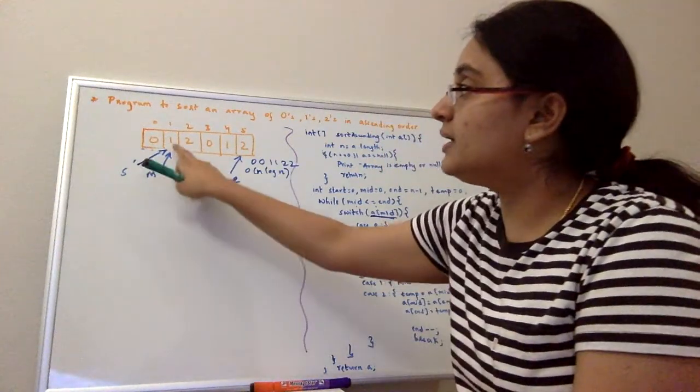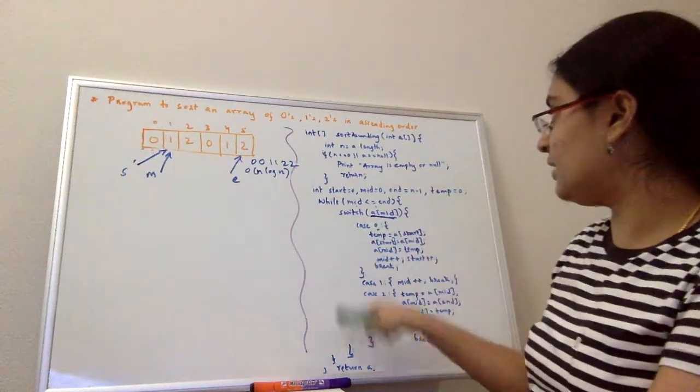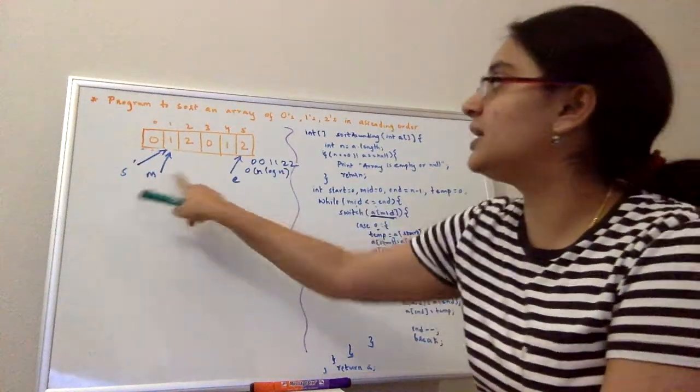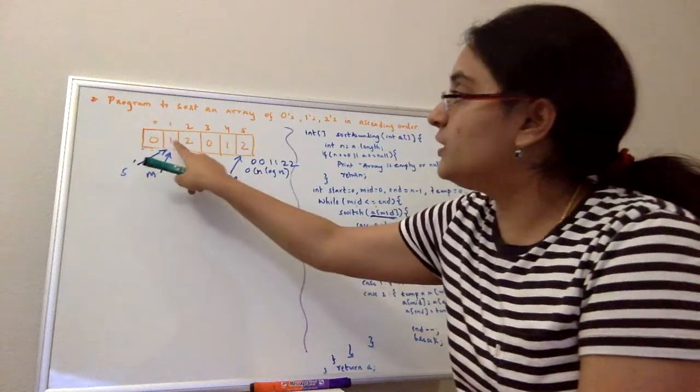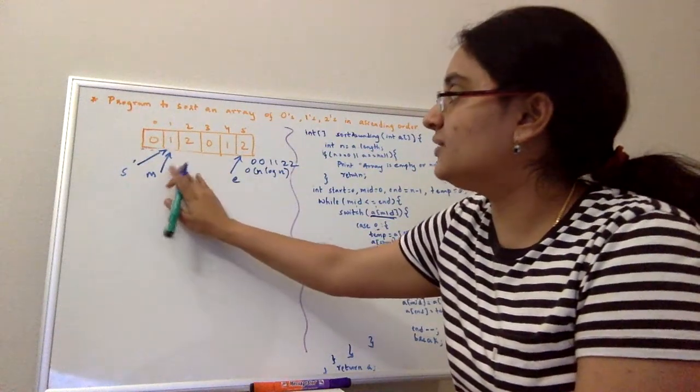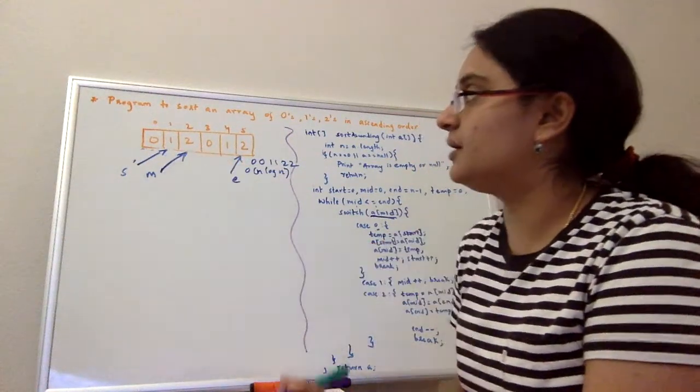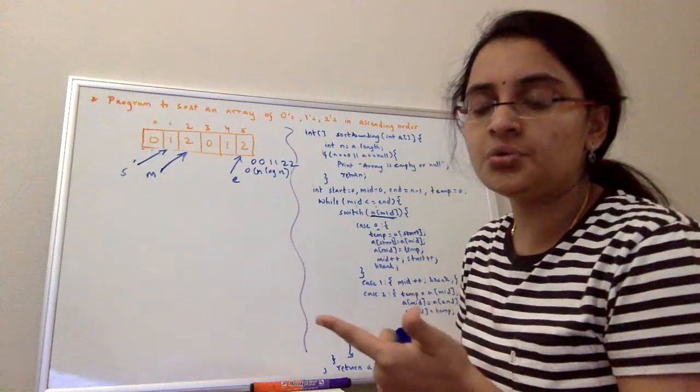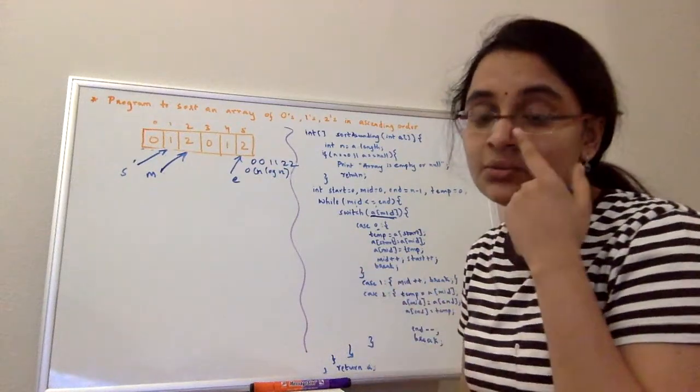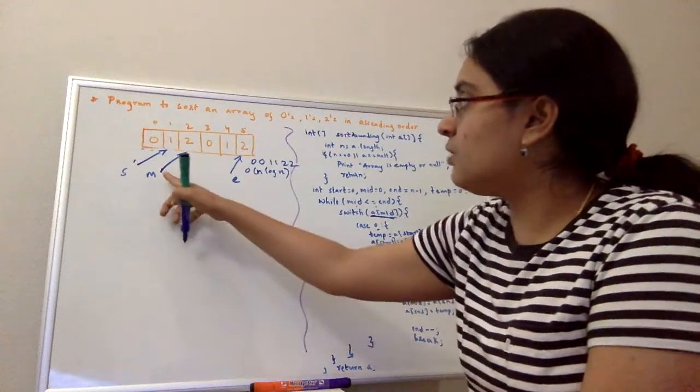Now we'll again check the condition: is mid less than end? Yes. And we'll check if this is one. When this is one, we won't do anything. We'll just increment the mid pointer to the next element. Only if it is zero and two we'll try to swap, but otherwise if it is one, we'll just keep it as is. So now mid is pointing here.